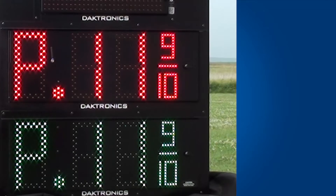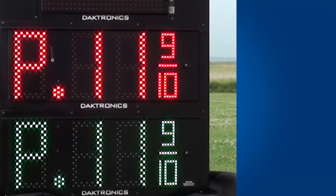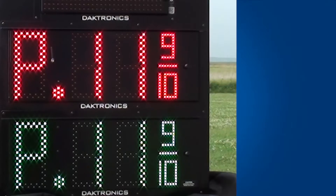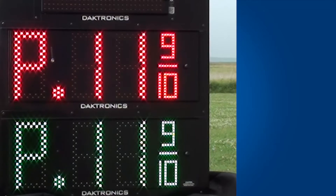The next step is to address the displays. All FuelLite displays are sent from the factory configured for line one and have default content of P11, which stands for price one, line one. Once the displays are installed, they will need to be addressed according to their position in the sign structure. This way, line one on the handheld radio changes all signs set to line one, and so on.